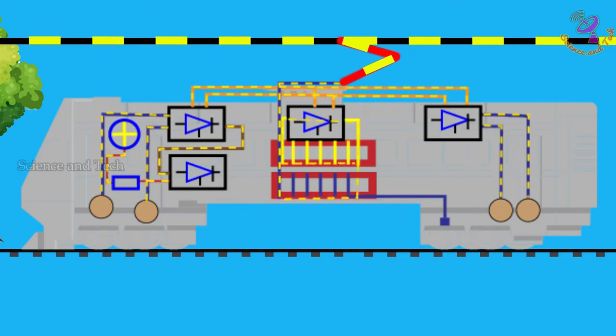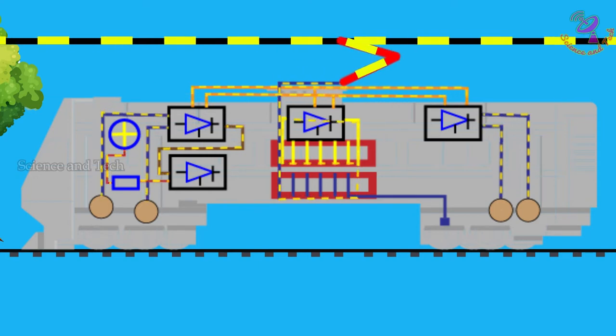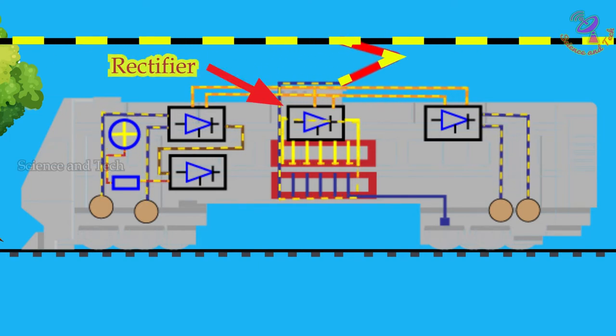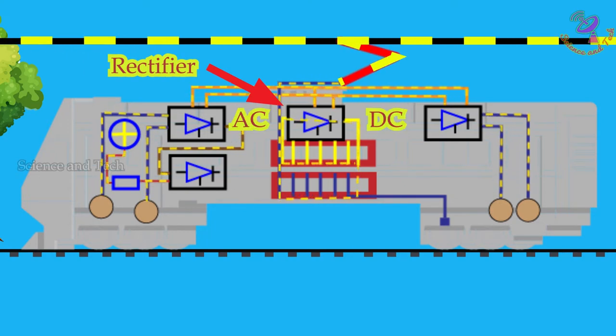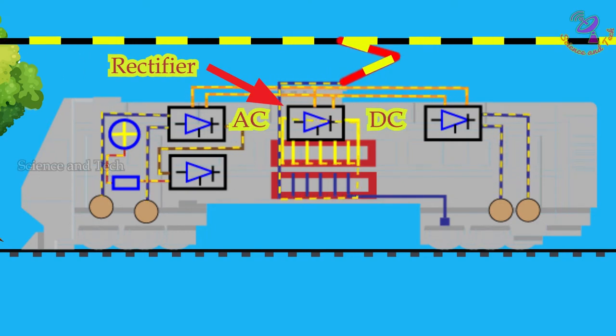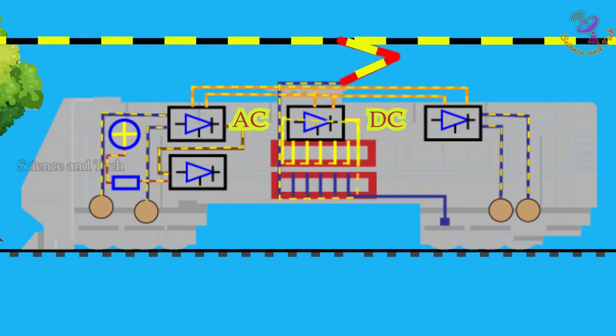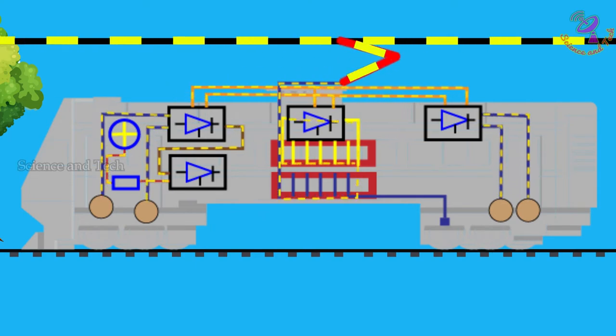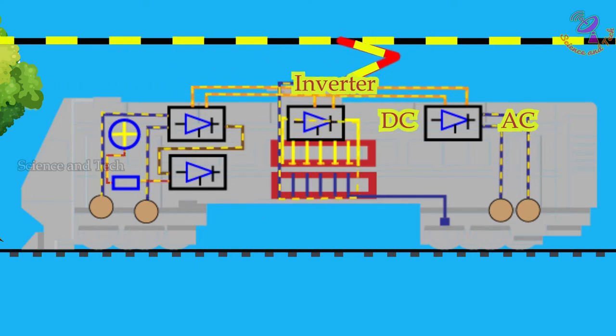From this transformer, electricity is passed to the rectifier. The purpose of the rectifier is to convert from alternate current to direct current. This converted DC electricity will pass to an inverter. The purpose of the inverter is to convert DC to AC.